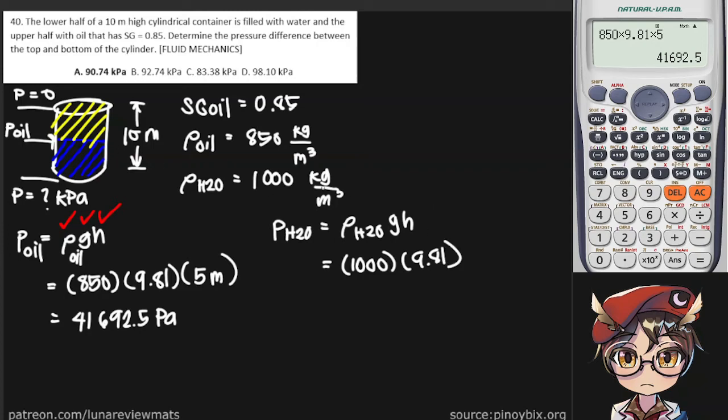This is the second half. Therefore, our H would be 5 meters. And these should add up to 10. And that gives us the pressure exerted by our water.